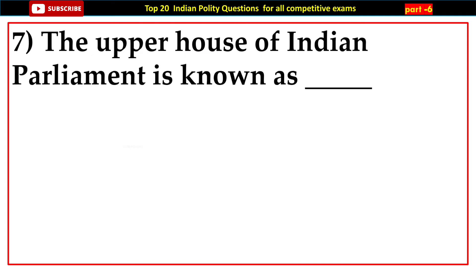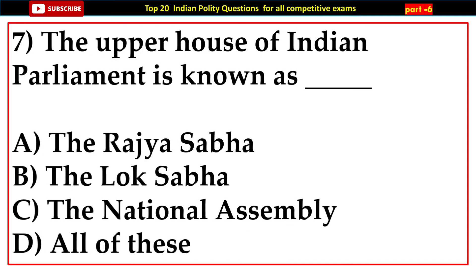Question number seven: The upper house of Indian Parliament is known as — options: A) The Rajya Sabha, B) Lok Sabha, C) The National Assembly, D) All of the above. Answer: A) The Rajya Sabha.